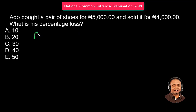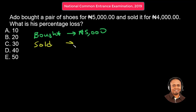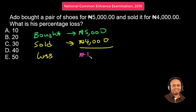We're told that he bought a pair of shoes for 5,000 Naira, then sold it for 4,000 Naira. So the loss is the difference in the amount, which is 1,000 Naira. And we're now asked to find the percentage loss.